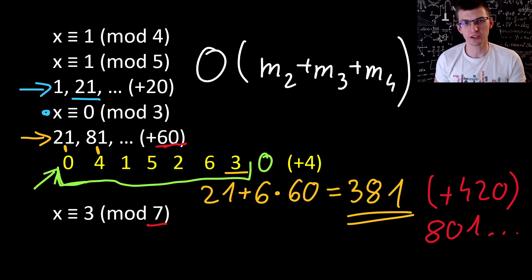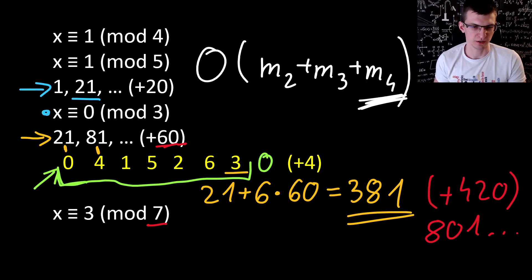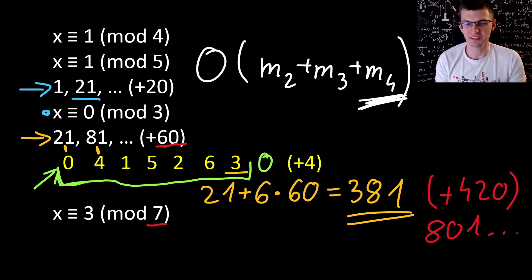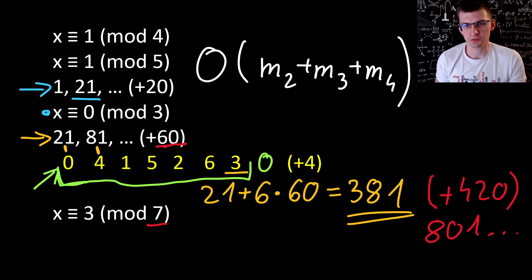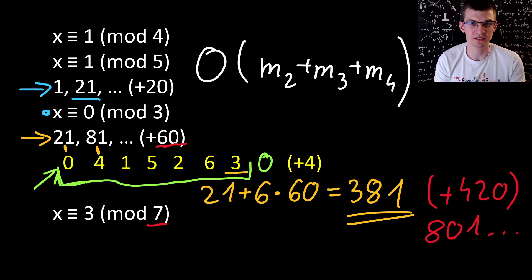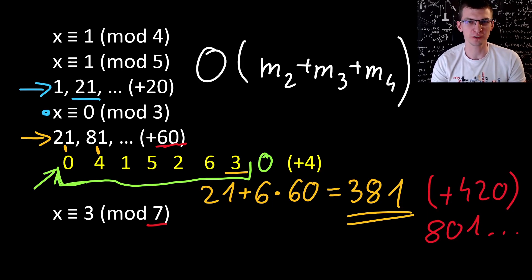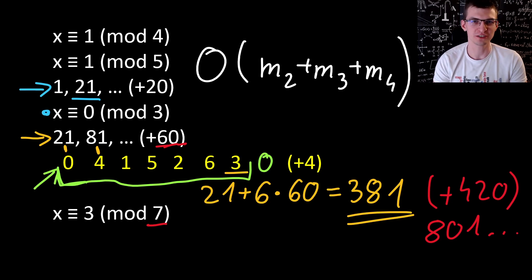If you are a programmer rather than a mathematician, what's important is that you need at most m4 steps to fit the remainder modulo m4. For the first phase to match the first two congruences you need that many steps, then m3, m4 — so that's the complexity for 4 moduli. I will link my code for Advent of Code day 13 problem in the description, because it required the Chinese Remainder Theorem. Thanks for watching, bye!